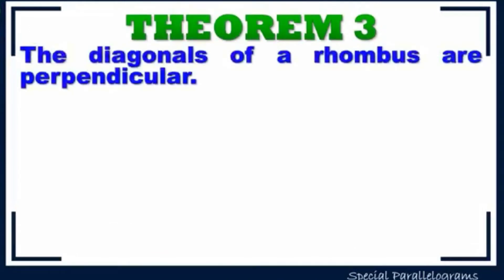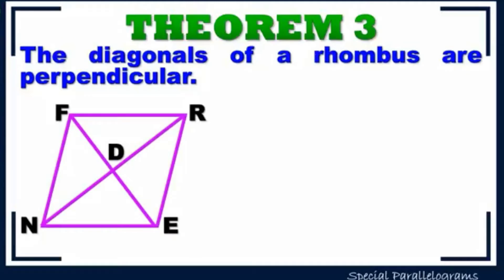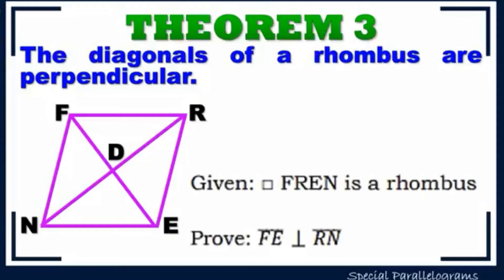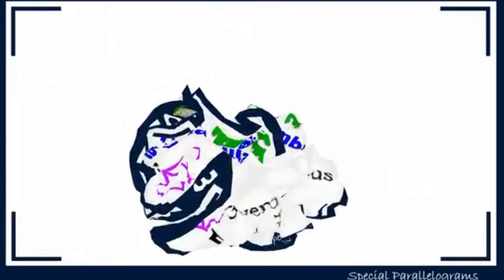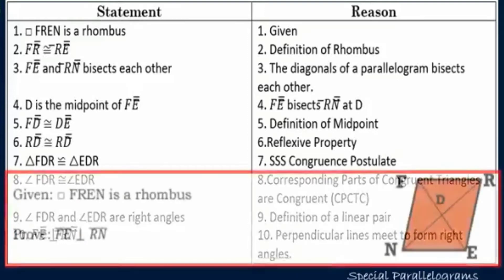Theorem number three: the diagonals of a rhombus are perpendicular. We have rhombus FRIEND, with its diagonals forming point D. Given that parallelogram FRIEND is a rhombus, we need to prove that line segment FE is perpendicular to line segment RN. To do so, let's set up our statement and reason table.